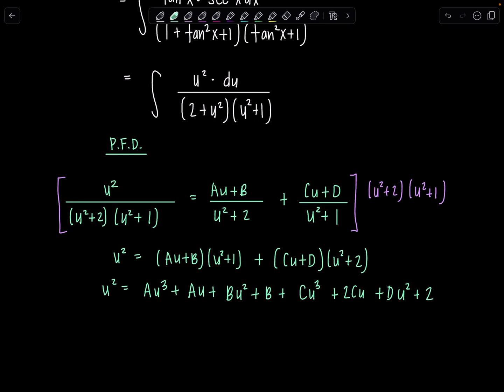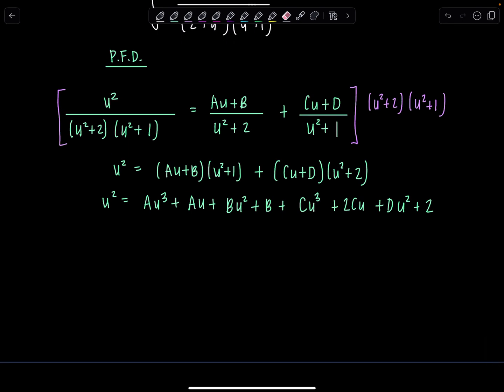Now to solve for a, b, c, and d, we're going to equate the coefficients of like terms from both sides of the equation. So the highest power of u that I see is u to the third. There are no u cubed on the left hand side, but there's au cubed and cu cubed on the right. So zero must equal a plus c. Moving on to u squared, there is one u squared on the left, and then I have bu squared and du squared on the right. So one must equal b plus d.